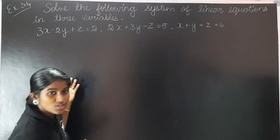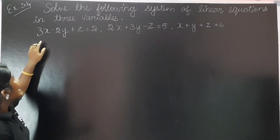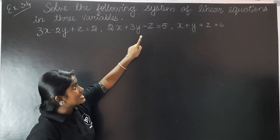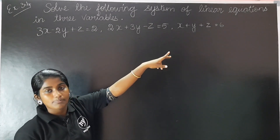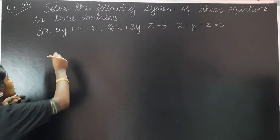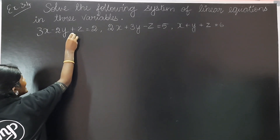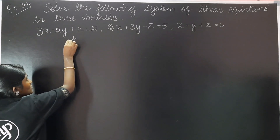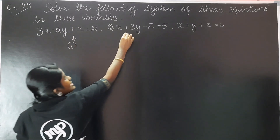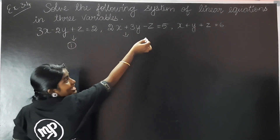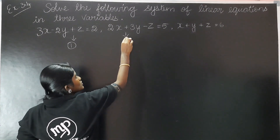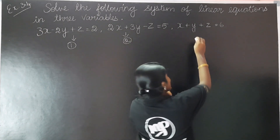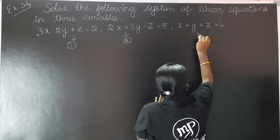We will have 3 equations. The first is: x plus 2y plus z is equal to 2. The second is: 2x plus 3y minus z is equal to 5. And the third is: x plus y plus z is equal to 6. We are going to label these as the first, second, and third equations respectively.